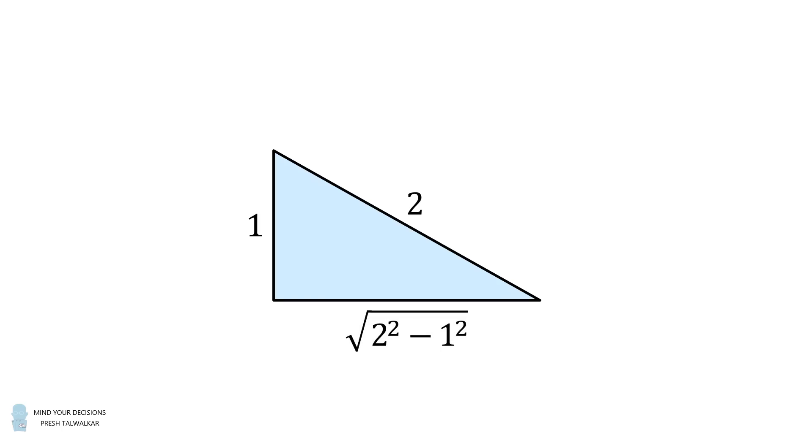But if you didn't recall that fact, you could also figure it out using our favorite right triangle theorem. It'll be equal to the square root of 2 squared minus 1 squared, which is equal to the square root of 3. So now, let's go back to our original diagram.